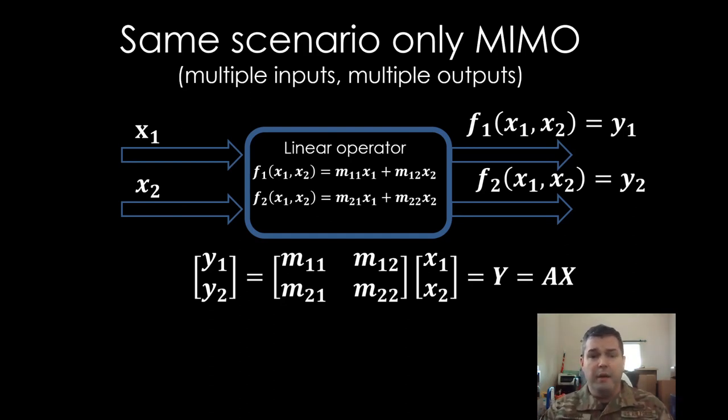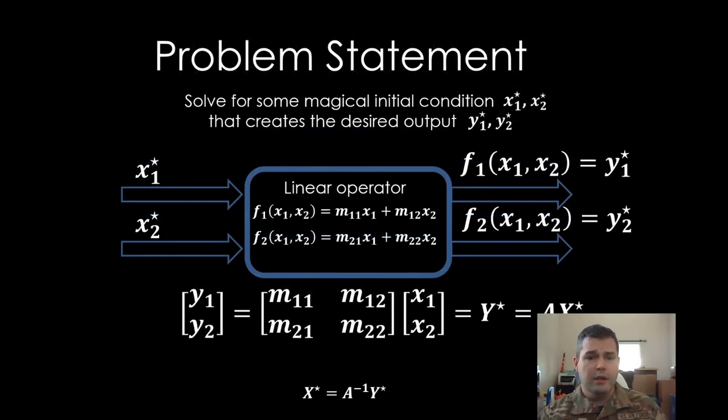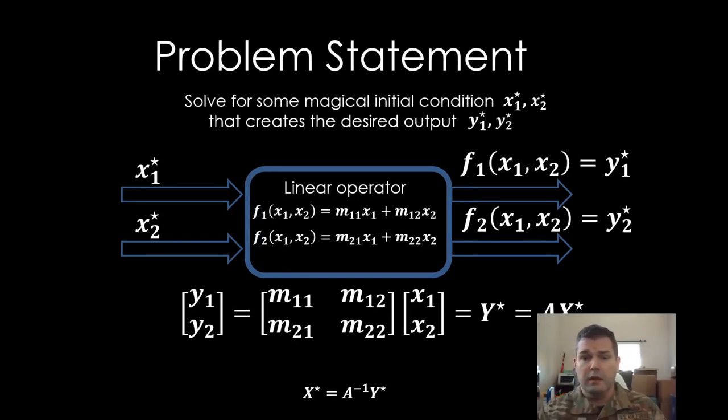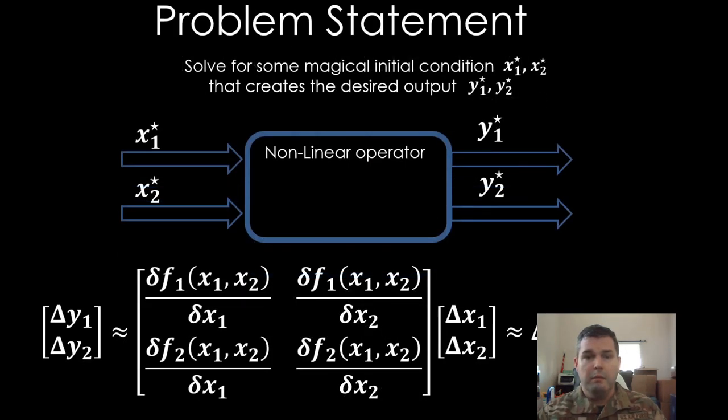Matrices come along when we start having multiple inputs, multiple functions, and multiple outputs. Let's start back with case one. We just had a linear operator: input, linear operator, output. Well, now we have multiple inputs, multiple linear operators, and multiple outputs. What you'll see is we can construct the same solution. It can be expressed the same way as Y equals MX plus B. In this case, when we're solving for that Y star, all we have to do is invert that A matrix, premultiply both sides by A inverse, and we get X star equals A inverse Y star.